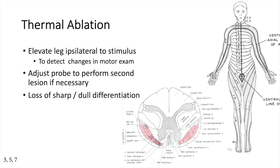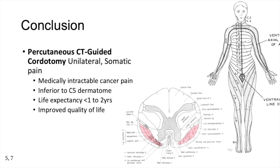The RF electrode may be adjusted either mediolaterally or anteroposteriorly to create a second lesion at 80 degrees Celsius for 60 seconds. Following lesioning, the patient should not be able to differentiate sharp or dull sensation. Percutaneous chordotomy is a minimally invasive option for the treatment of unilateral intractable somatic cancer pain below the level of C5 in a patient with a one to two year life expectancy. It can be performed relatively easily in the awake patient and improves quality of life in a well-selected patient.